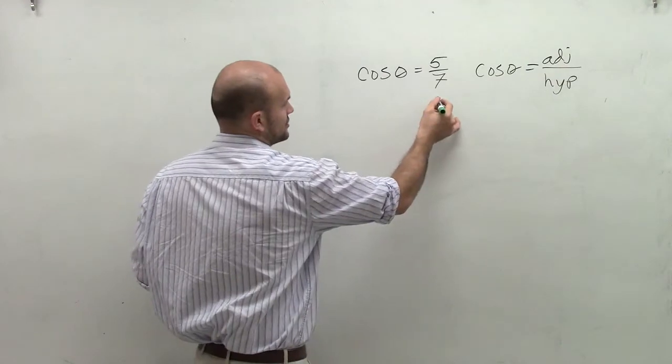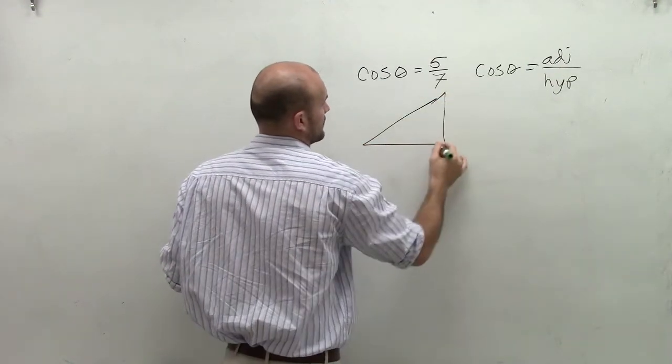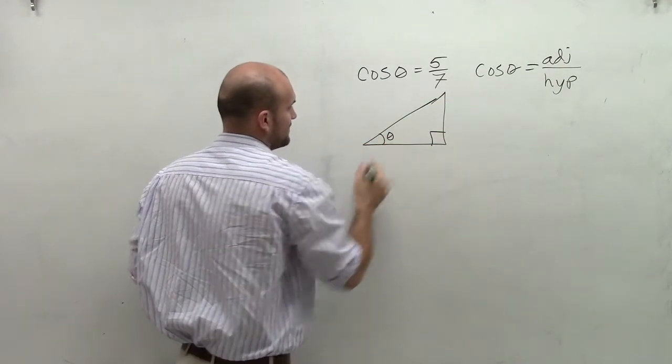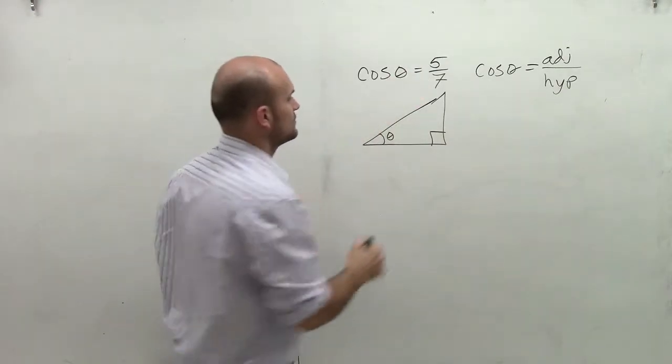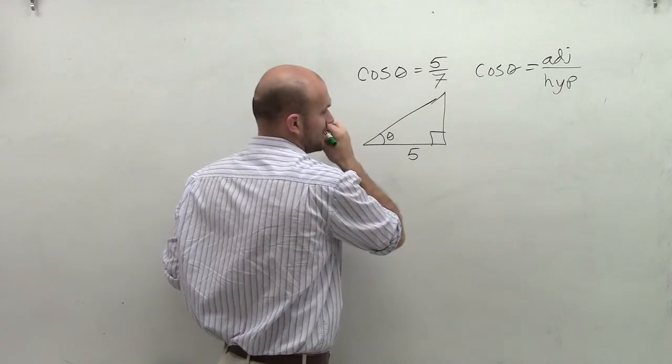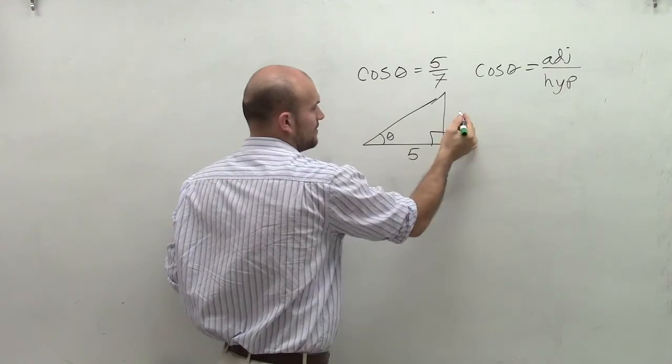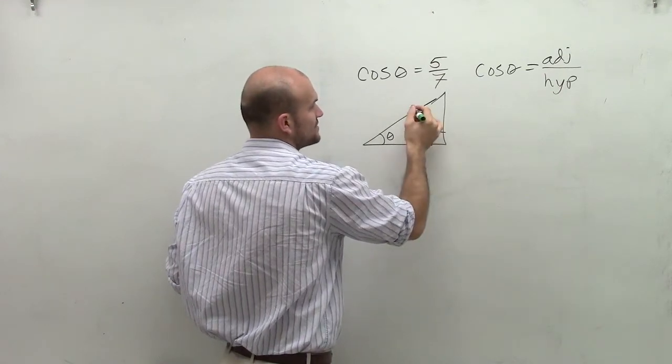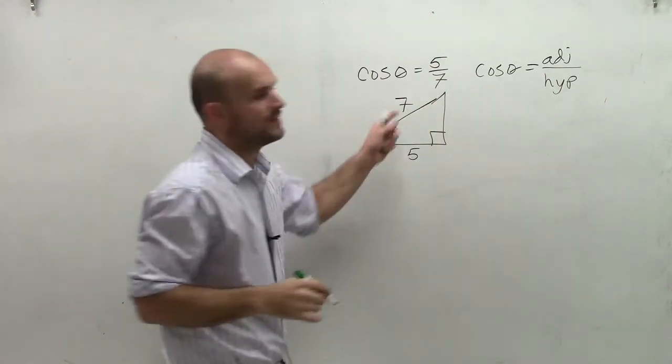So what I'm going to do is I'm going to draw a generic triangle, right angle, and I'm just going to have theta be there. Now, I said the adjacent side is 5, and my hypotenuse is 7.